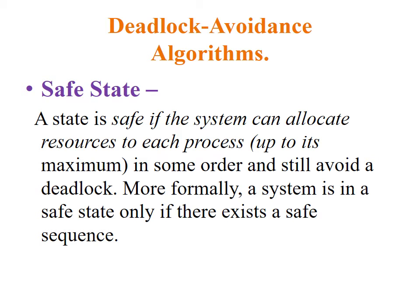We explore two deadlock avoidance algorithms. The first concept is the safe state. A state is safe if the system can allocate resources to each process in some order and still avoid a deadlock. More formally, a system is in a safe state only if there exists a safe sequence. A sequence of processes P1, P2, P3 up to PN is a safe sequence for the current allocation status. For each Pi, the resource requests that Pi can still make can be satisfied by the currently available resources plus the resources held by all Pj where j is less than i.